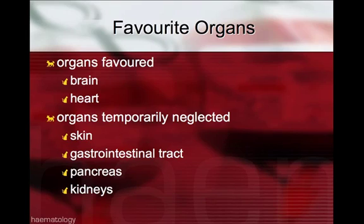The body does have a few favorite organs, and during shock the cardiovascular system will shunt blood towards those that will keep the body alive — being the brain and the heart — and sacrifice organs that can temporarily have less blood supply, like the skin, gastrointestinal tract, the pancreas, and the kidneys.